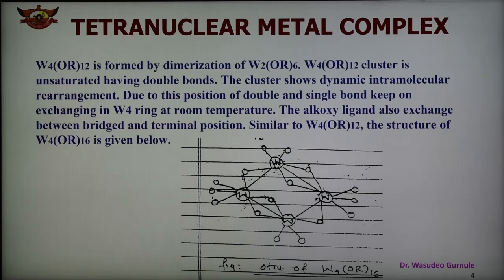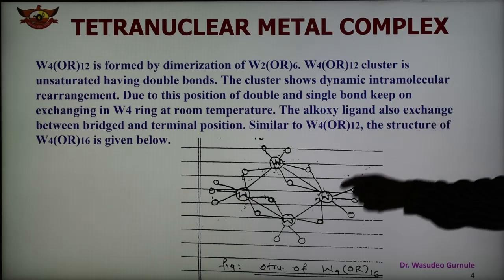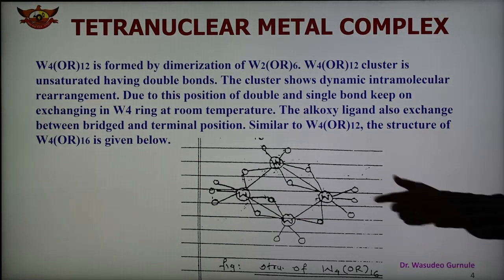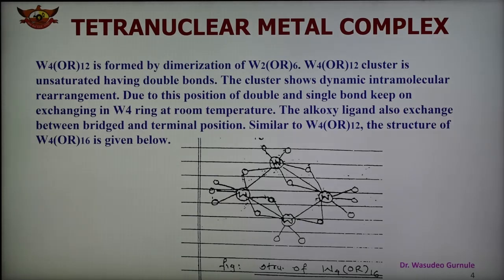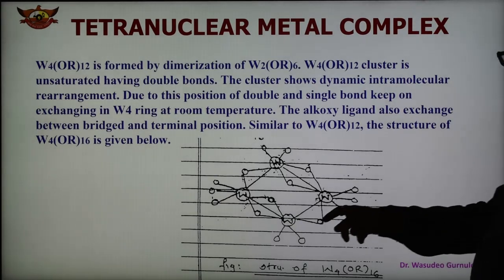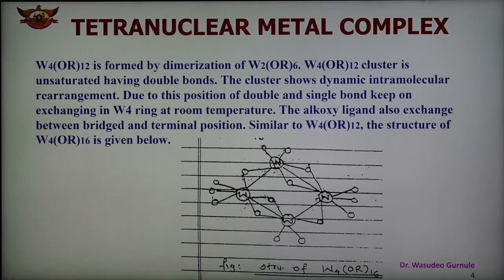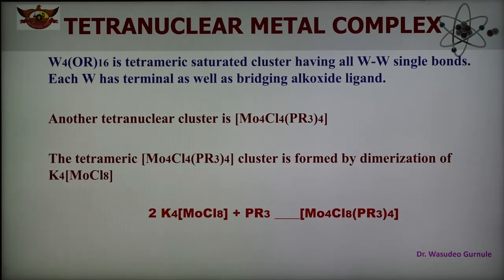Similar to W4OR12, the structure of W4OR16 is also shown. Here again there are 4 tungsten atoms with bridging alkoxide ligands, and a total of 16 alkoxide ligands — both terminal and bridging. W4OR16 is a tetrameric saturated cluster containing tungsten-tungsten single bonds, and each tungsten has both terminal and bridging alkoxide ligands.